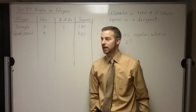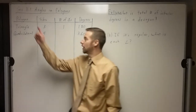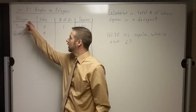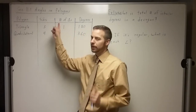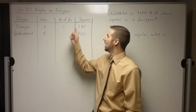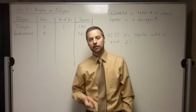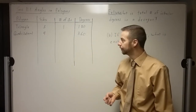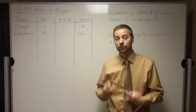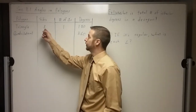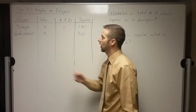I started with a little chart today. If you notice, I've got some information up here about a polygon: the number of sides it has, the number of triangles — we'll talk about that in just a second — and then the number of degrees on the interior of that polygon. I already filled in a couple of these because we've already talked about them. A triangle has three sides, it's only one triangle, and it has 180 degrees.